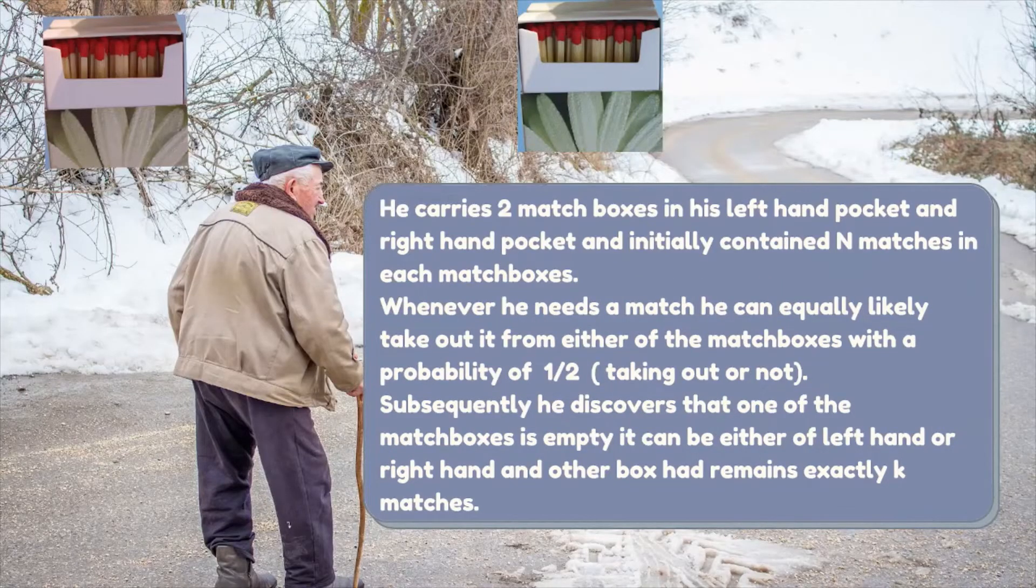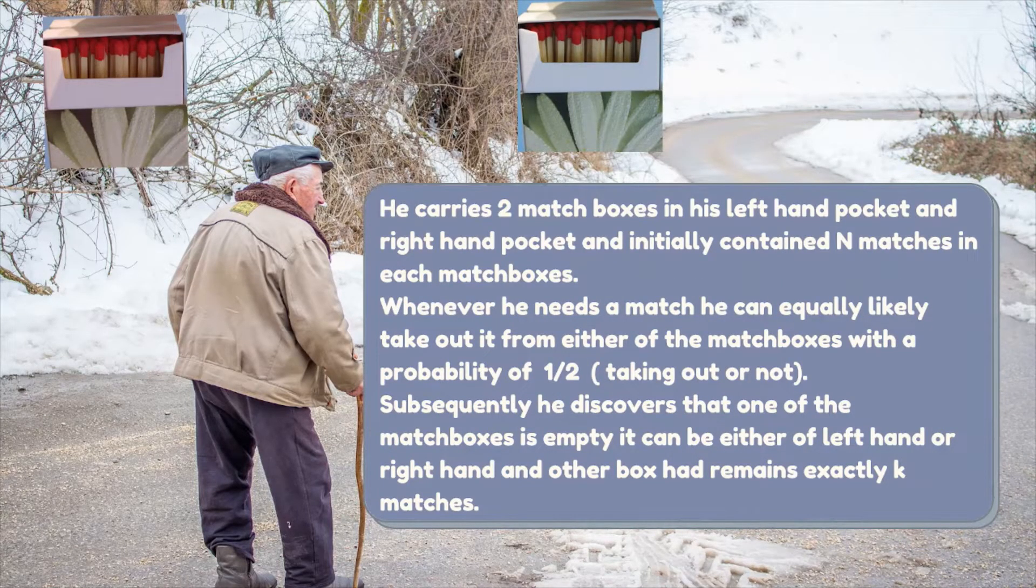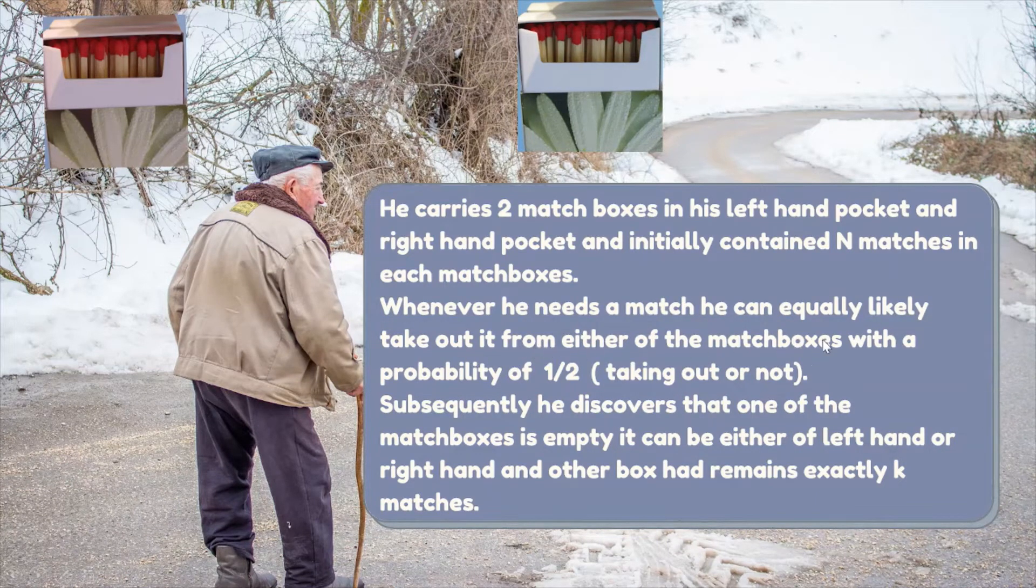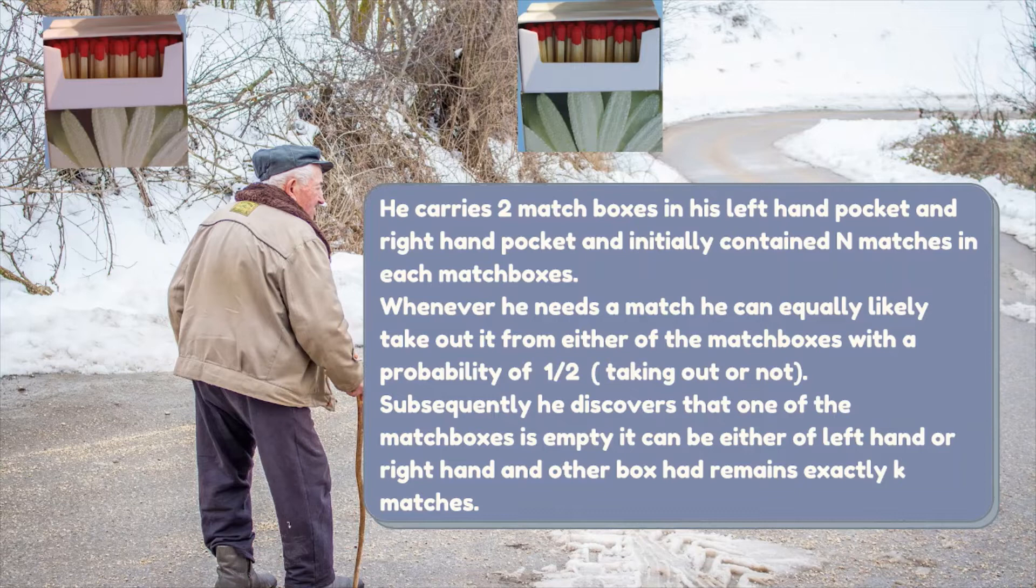We can consider it easily like that he carries two matchboxes in his left hand pocket and right hand pocket. Initially contain N matches in each matchbox. Whenever he needs a match, he can equally likely take it out from either of the matchboxes with a probability of 1 by 2. It is our success probability of taking a match out.